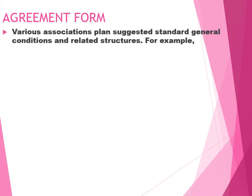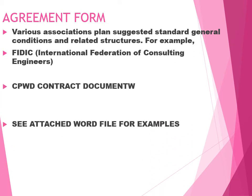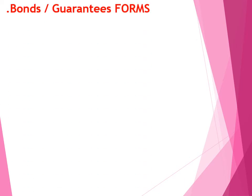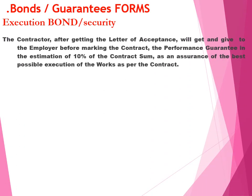Agreement forms reference various specifications, plans, general conditions, and related structures. For example, FIDIC and CPWD contract documents, with attached world file examples. These include bids and guarantee forms, execution bond, and security bond.